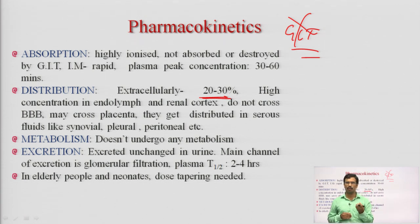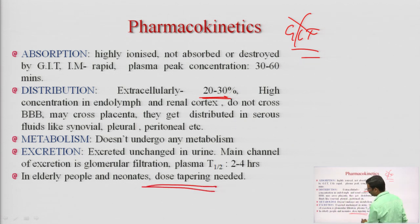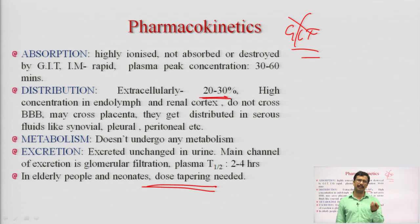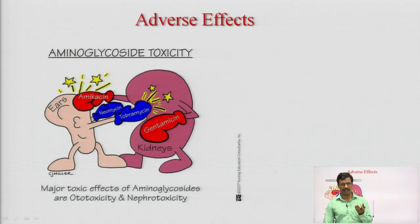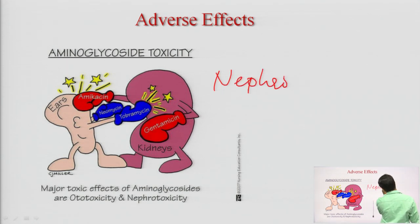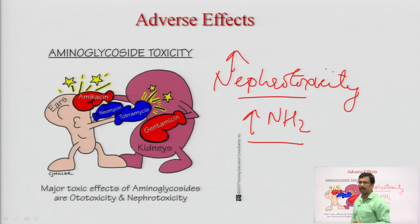Regarding pharmacokinetics: aminoglycosides have a high ionization rate, so oral absorption from the GIT is very poor — the drug degrades in acid. Therefore, most aminoglycosides are given by the parenteral route; in some cases, intraocular or topical routes are also used. Extracellular distribution is very good (20-30%). They have high concentration in the endolymph of the ear, which is a problem — this is the cause of ototoxicity. They do not cross the blood-brain barrier but can cross the placenta, so they must not be given to pregnant women. They have no metabolism and are excreted unchanged in urine.